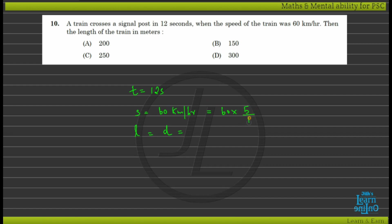The distance equals speed multiplied by time. Speed is 60 km/h, converting to m/s: 60 times 5 divided by 18 equals 50/3 meters per second. Time is 12 seconds. So distance equals 50/3 times 12, giving 200 meters.